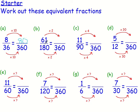For 61/180 to be over 360, it's still going to have the same value, just look slightly different. I need to multiply the bottom by 2, and whatever I do to the bottom I must do to the top, so I get 122 on top. For 11/90 to be a fraction over 360, I multiply 90 by 4 to get 360, and do the same to the top, so I get 44.